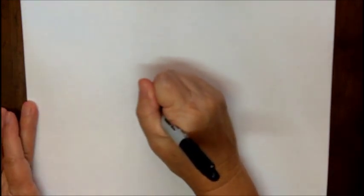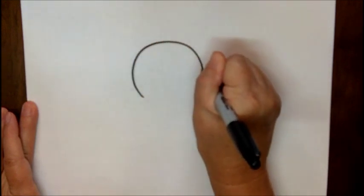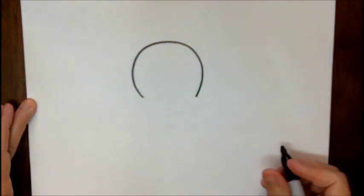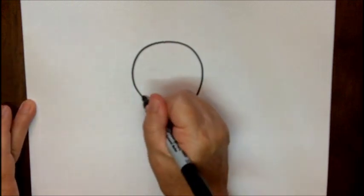I'm going to start out with a C shape, it's kind of upside down, and then under that we are going to make another C shape.